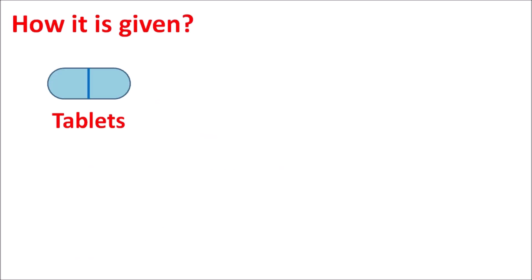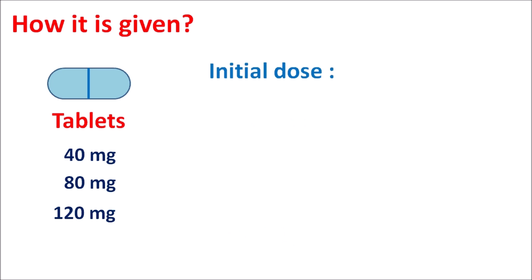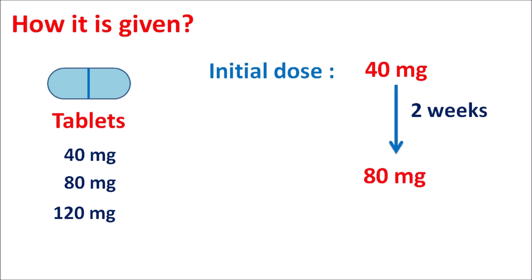This drug is available as tablets at different strengths: 40 mg, 80 mg, and 120 mg. Initially it is started at the low dose of 40 mg once daily. After two weeks of treatment, the dose can be increased up to 80 mg to further reduce uric acid levels. In patients with renal impairment, this drug should be started at the low dose of 40 mg.